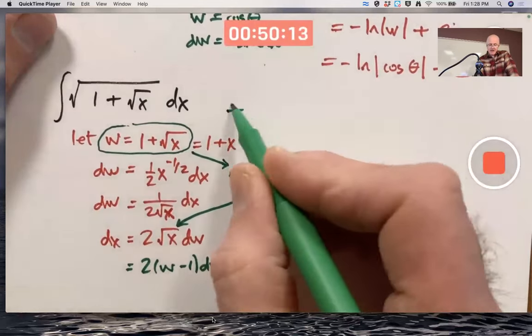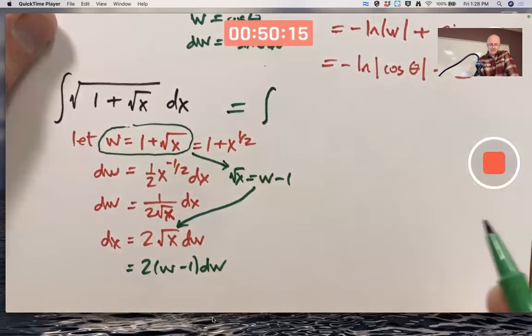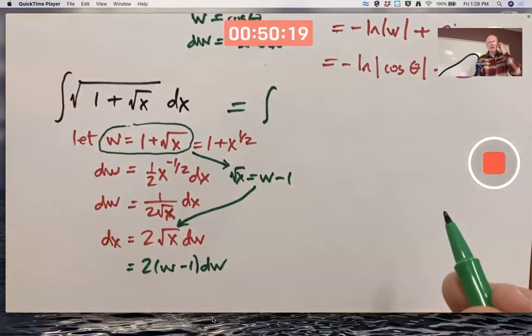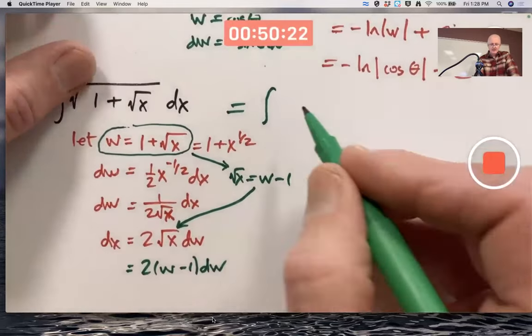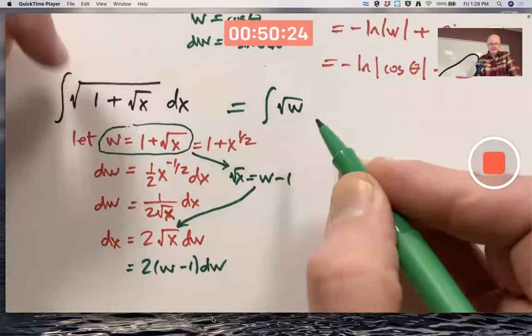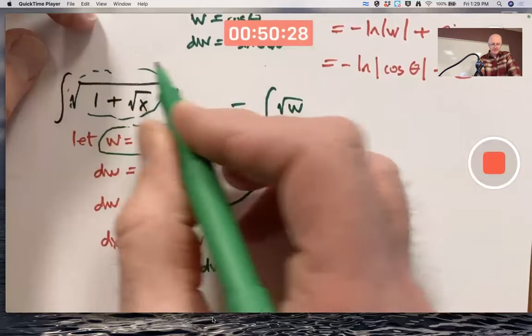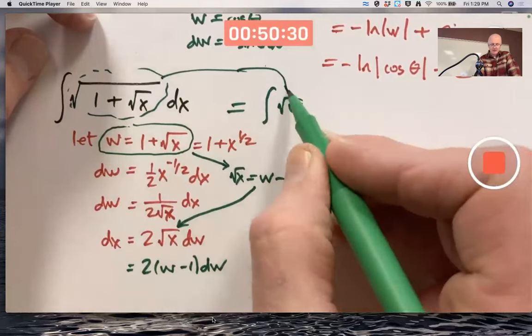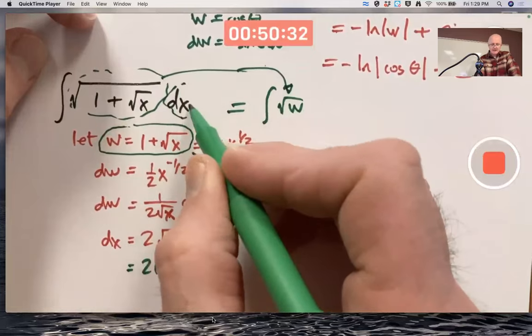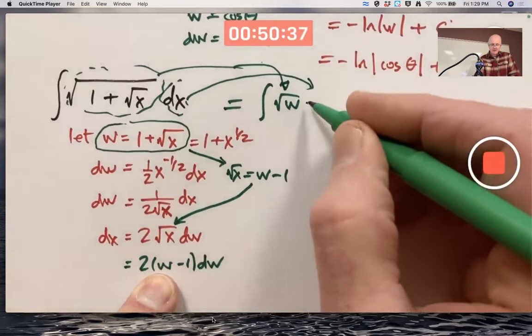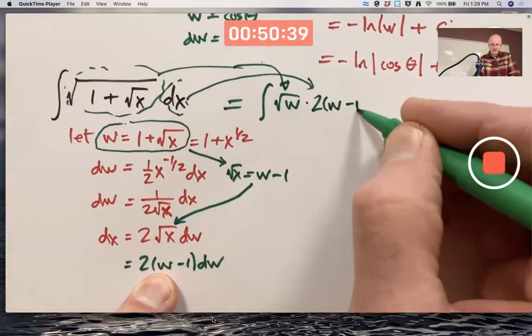So now combining all these things, this integral does become simpler. Doesn't look much simpler, but it definitely is conceptually simpler. You get a square root of w for this entire thing. That becomes the square root of w. And then the dx gets replaced by this. Times 2 times w minus 1 dw.